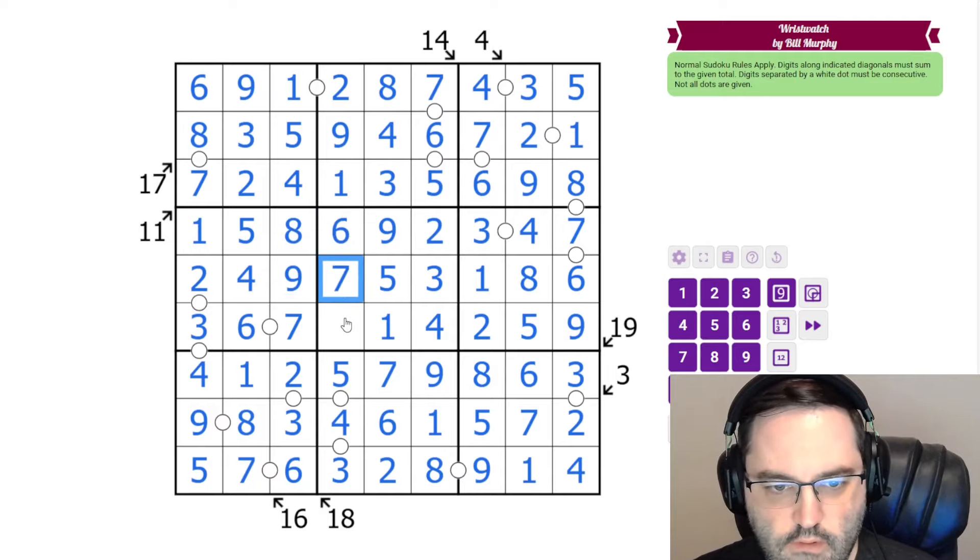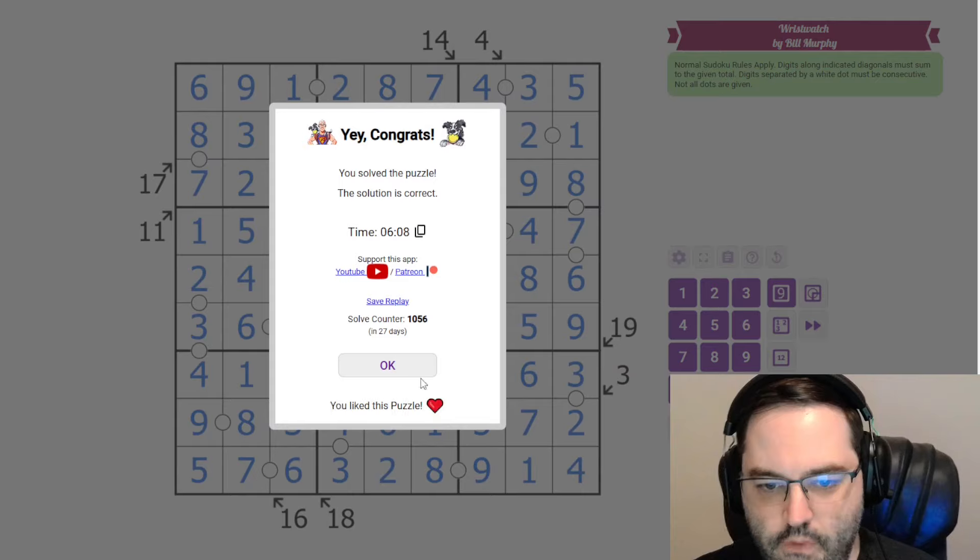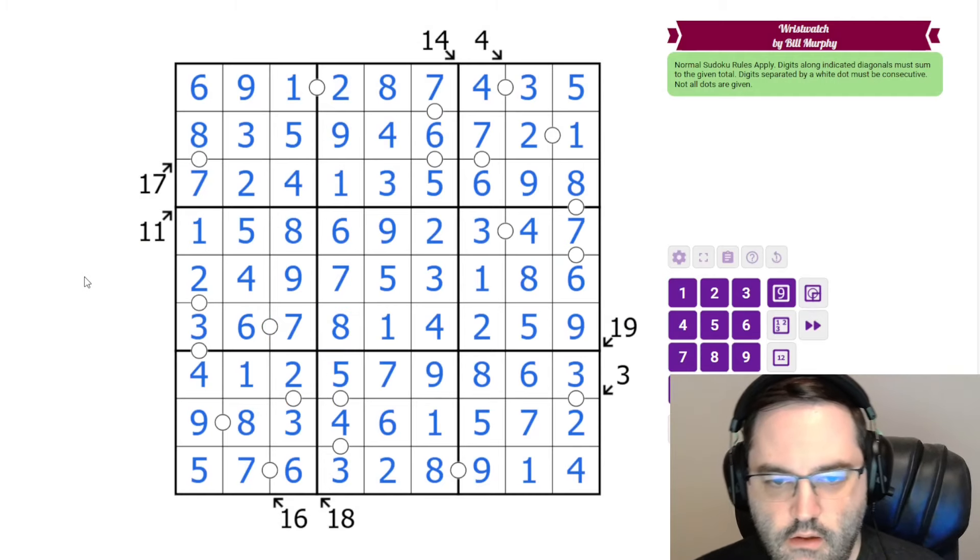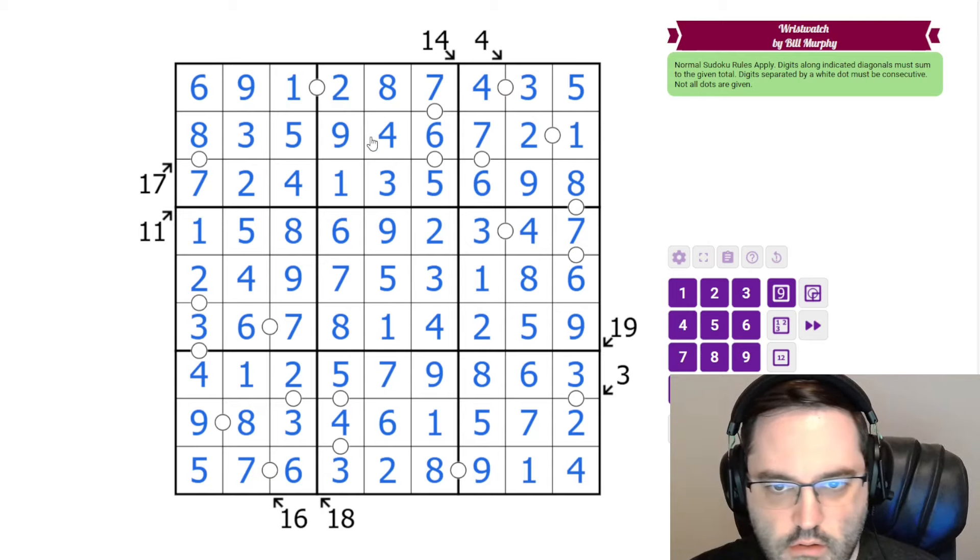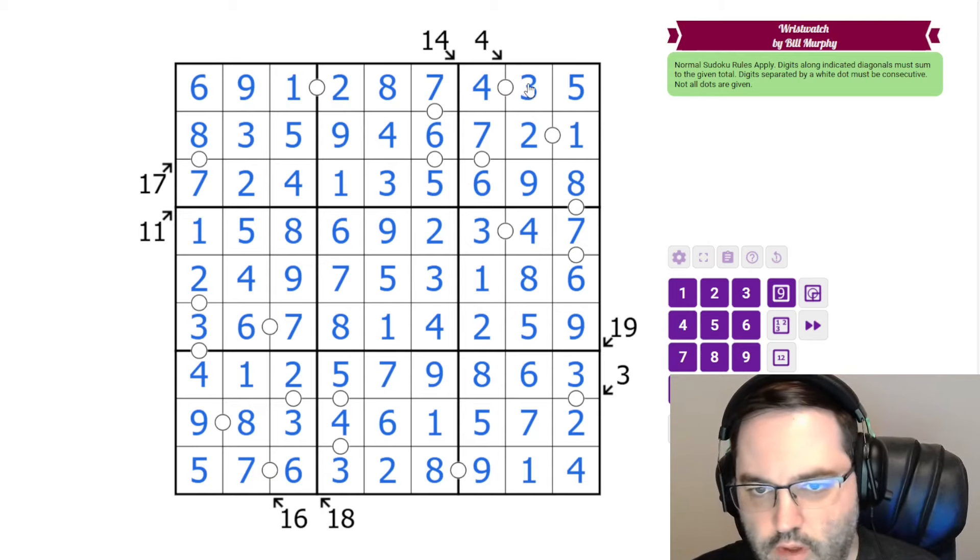And to finish off, we have 6, 7, 8. And that's the solution. Nice symmetry there from Bill. And it just flows nicely.